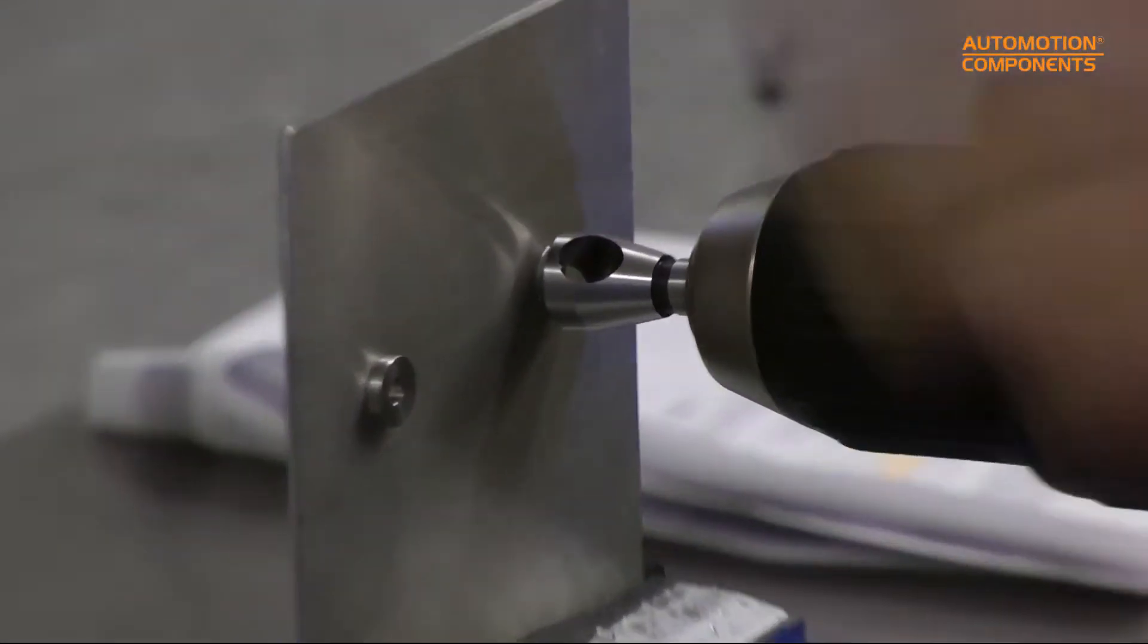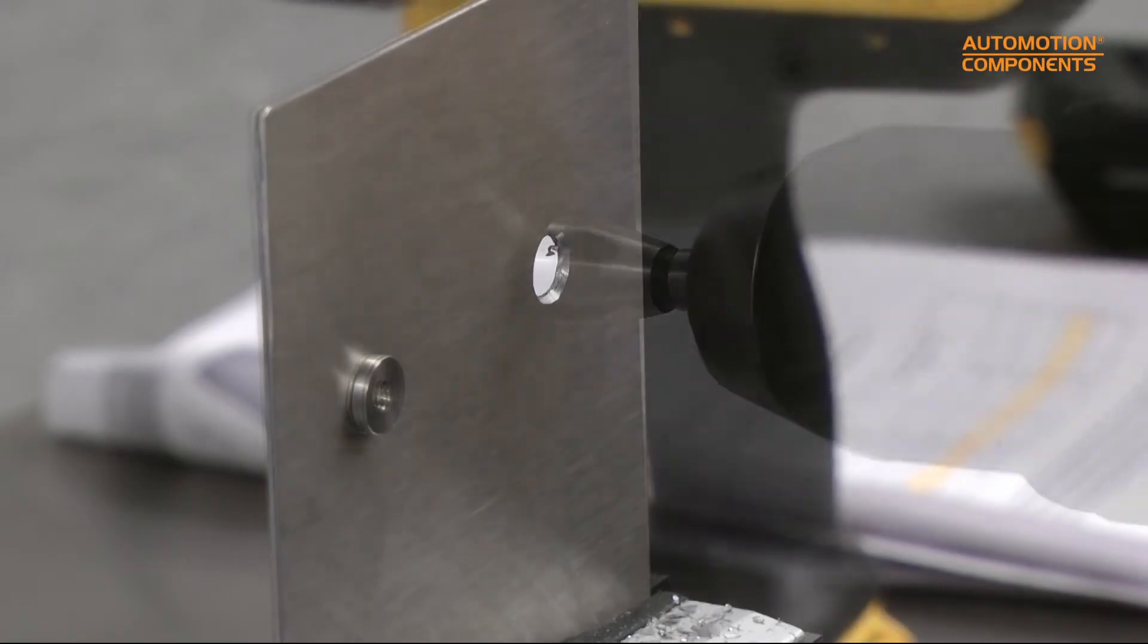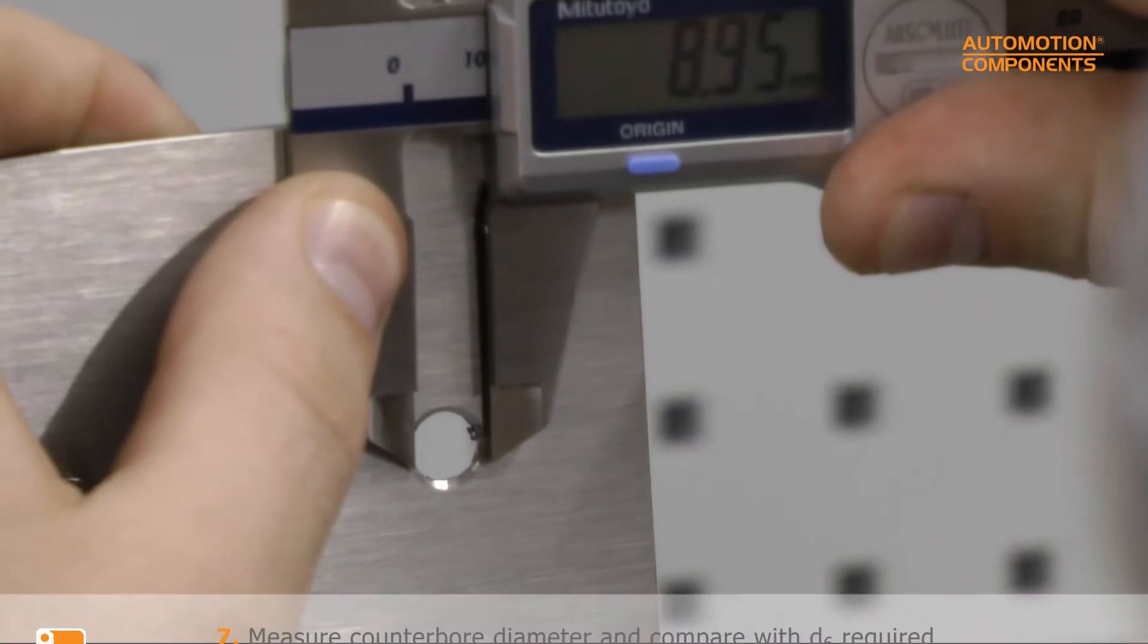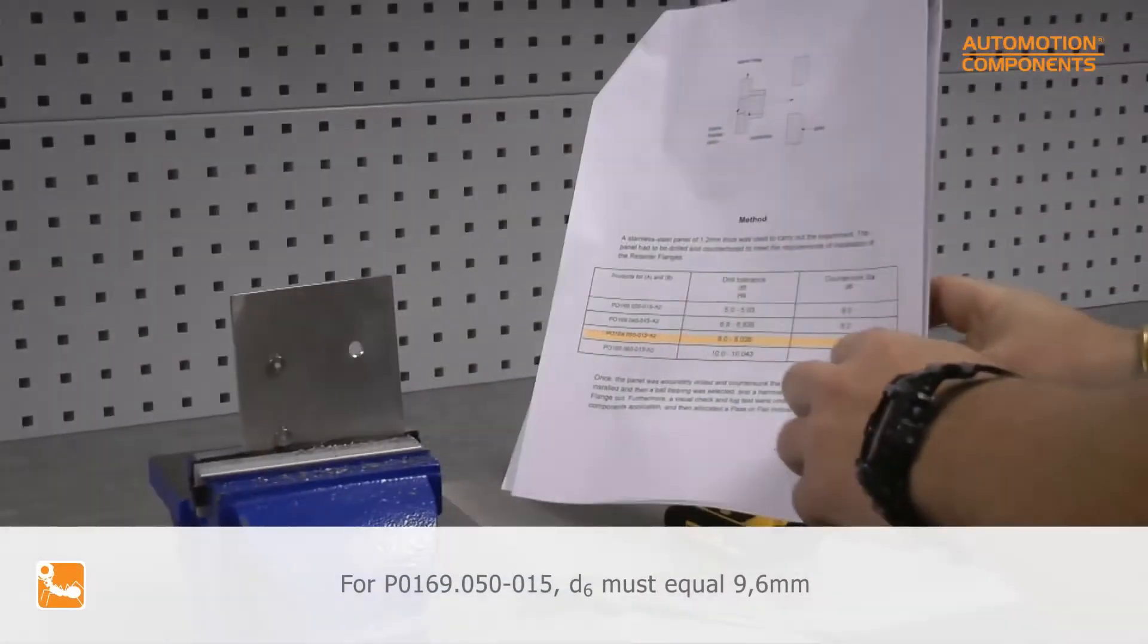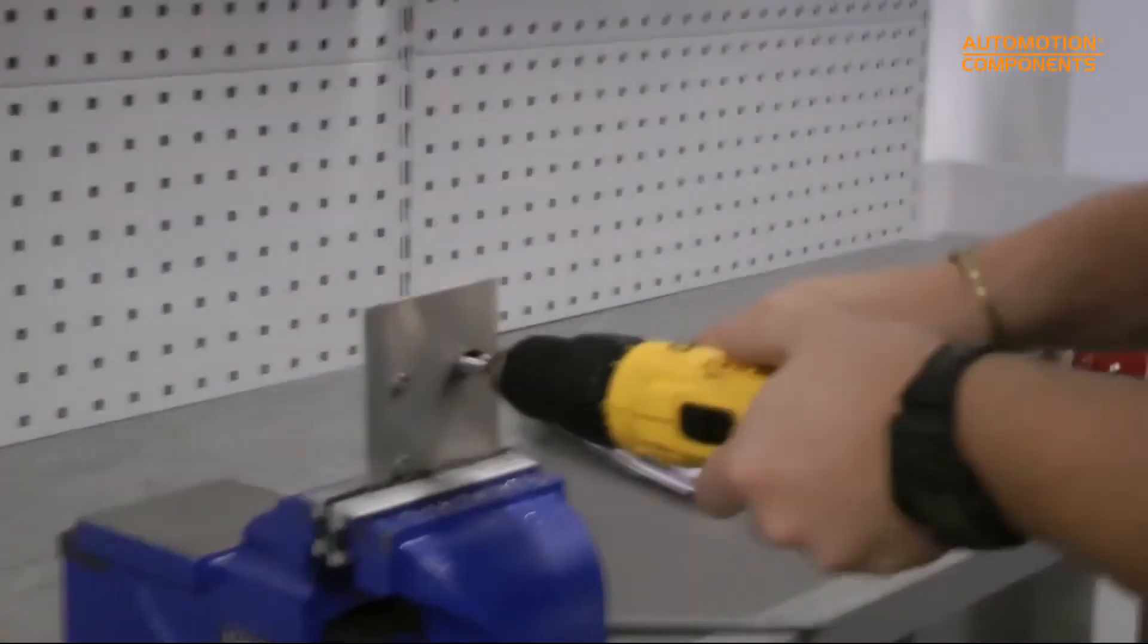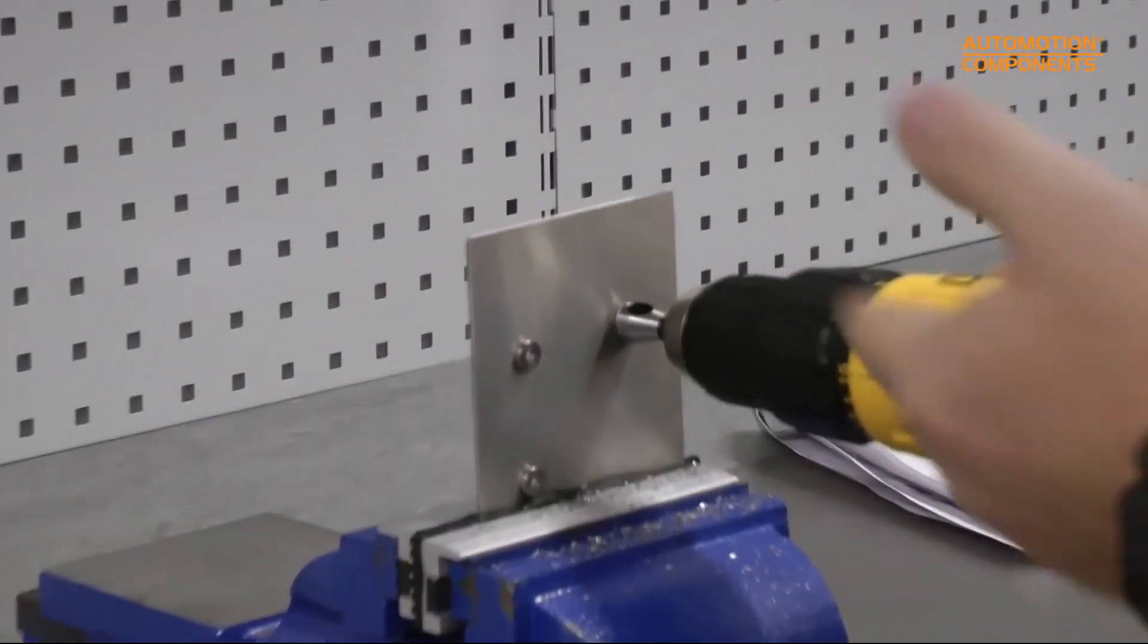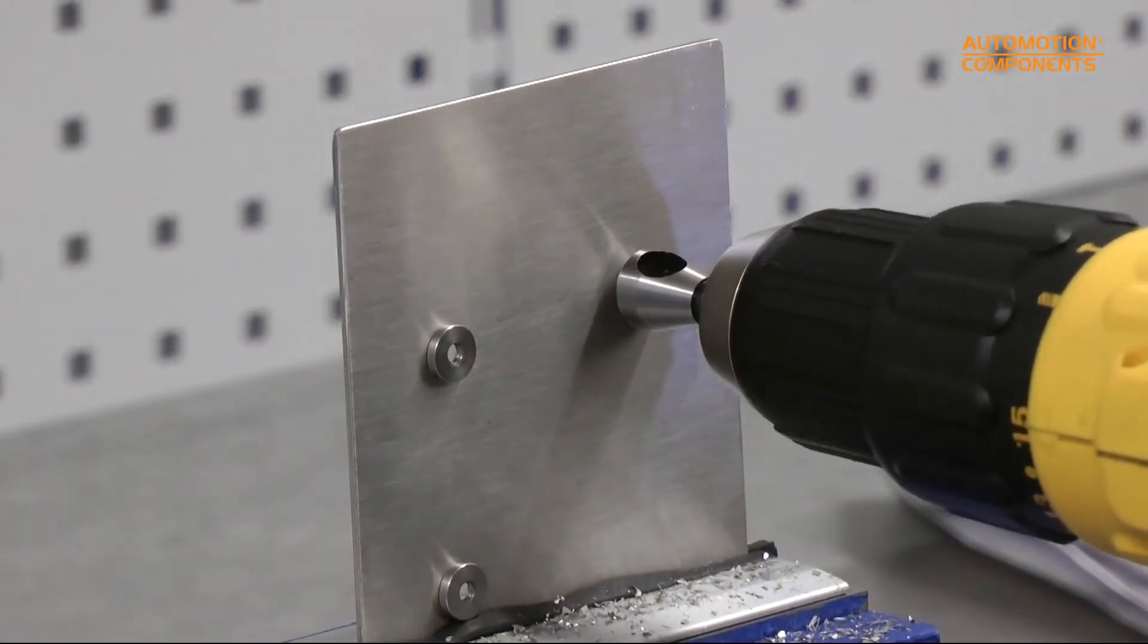So this is 8.95 so I need 9.6, so just keep doing that until I get there. That's the reason why you want to slow it down. If you're going too fast you'll go over that tolerance. So you want to go nice and slow.